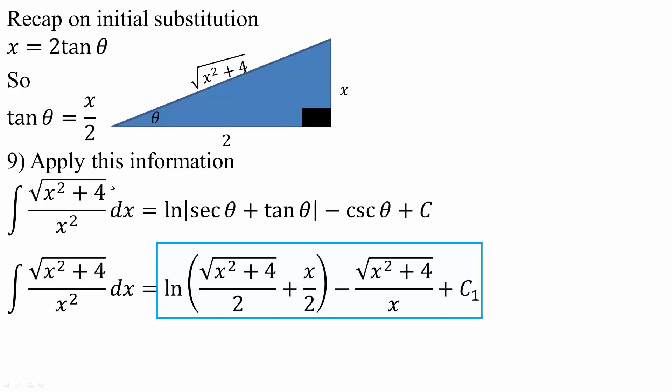Now we apply this information. Secant theta is 1 over cosine theta, and cosine is adjacent over hypotenuse, so secant theta flips to hypotenuse over adjacent, which is the square root of x squared plus 4 over 2.